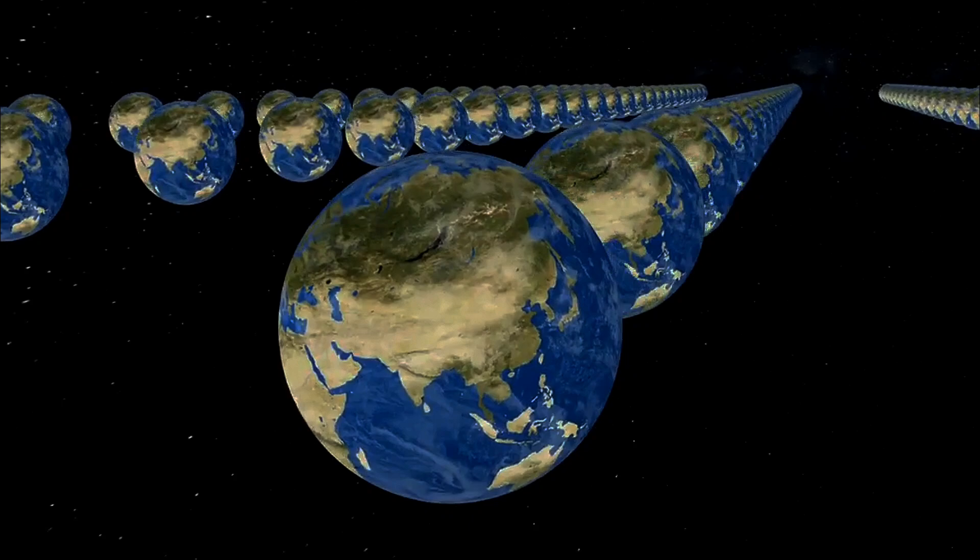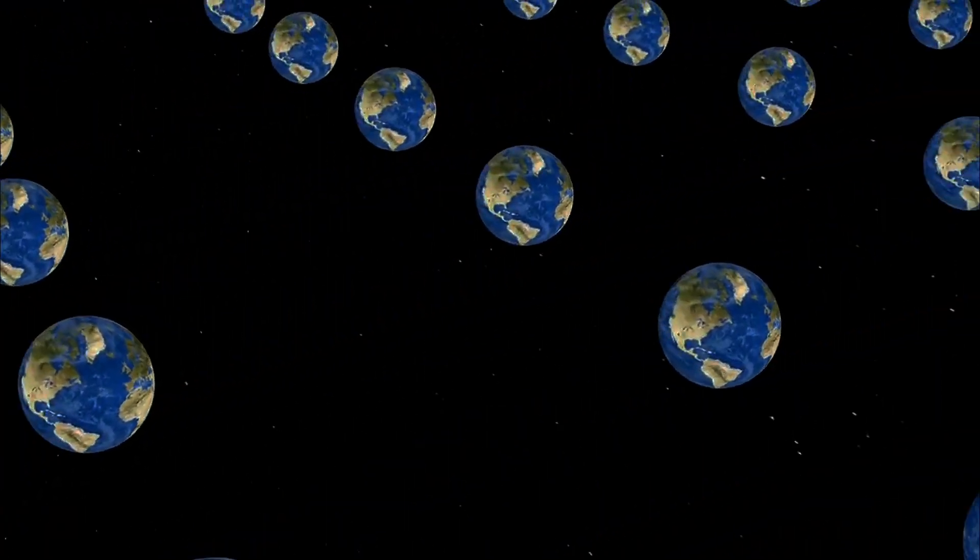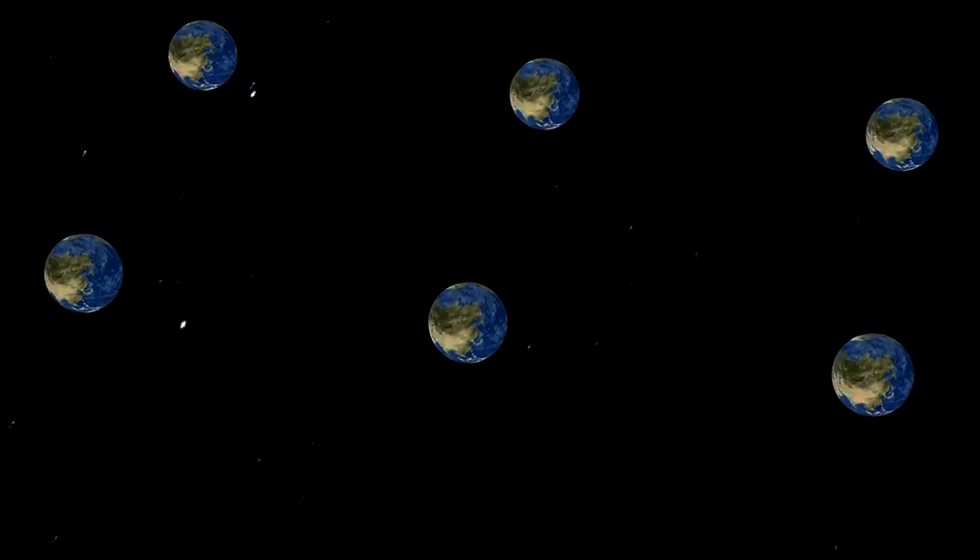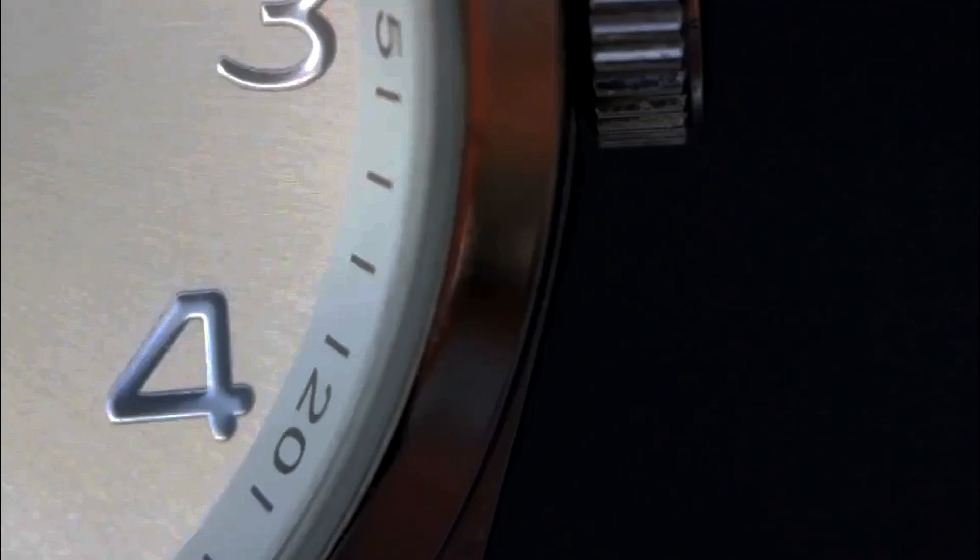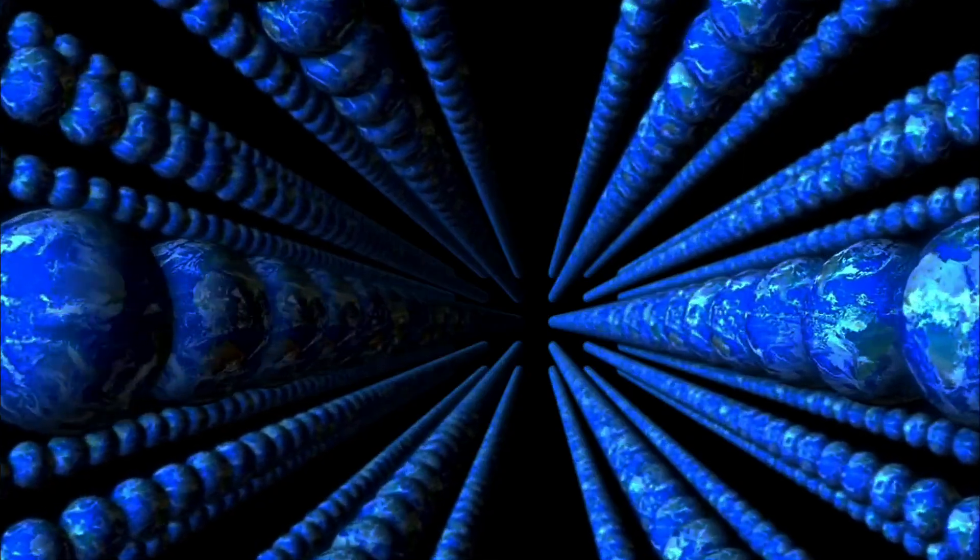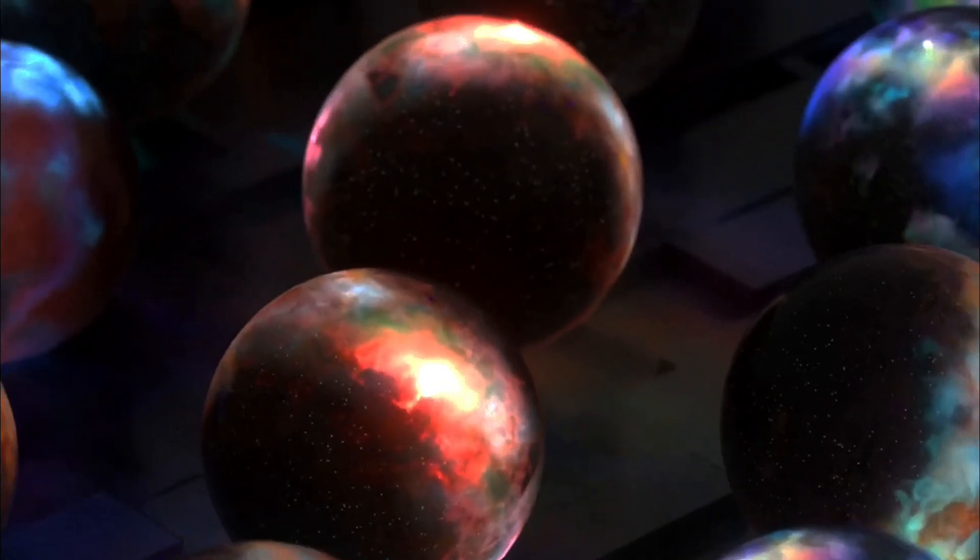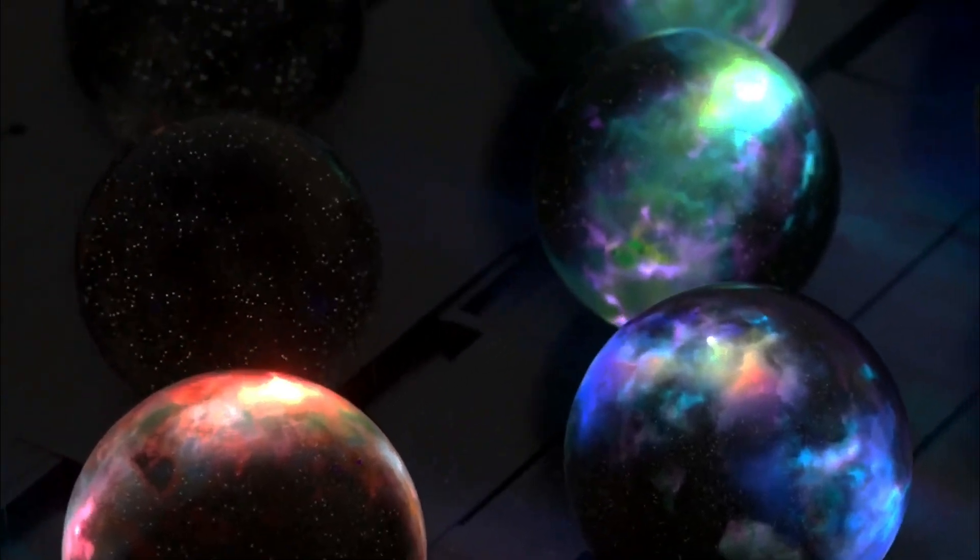But here's where it gets even weirder. Some interpretations of quantum mechanics, like the many-worlds interpretation, propose that every quantum event spawns a multitude of parallel universes. Each possible outcome of a quantum event happens in a different universe. In this view, time doesn't just flow in one direction, it branches out, creating a vast multiverse of possibilities.